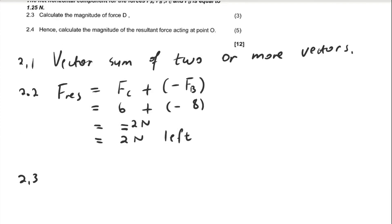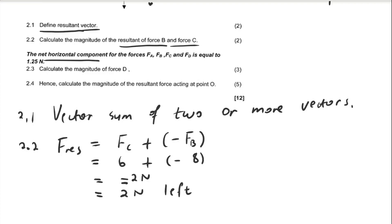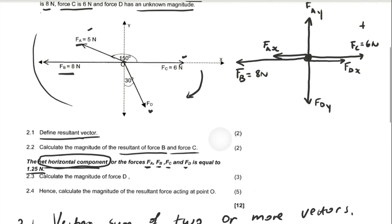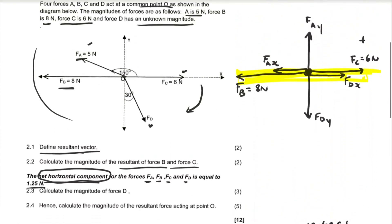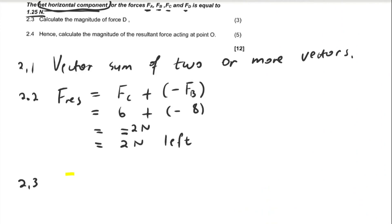Question 2.3: The net horizontal component of forces A, B, C, and D is given as 1.25 newtons. The net horizontal component means the vector sum of all forces along the horizontal direction. So sigma Fx equals 1.25 newtons.